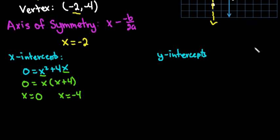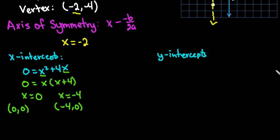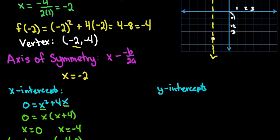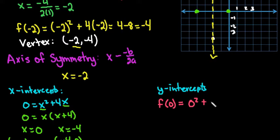Depending on how you're asked to write the answer: if they want just integers, write x equals 0 and x equals negative 4; if they want ordered pairs, write (0, 0) and (−4, 0). Plotting those points, we can see that (0, 0) is also the y-intercept, because the y-intercept is found by evaluating f of zero — zero squared plus 4 times zero equals zero. So the y-intercept is (0, 0), or just zero as an integer.